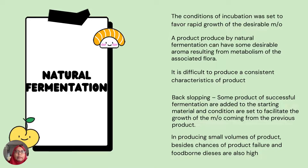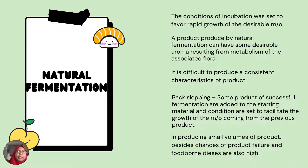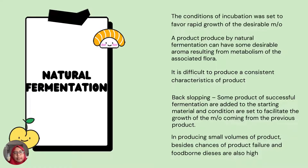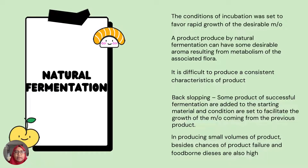Basically, the Koreans produce kimchi because they want to preserve vegetables so that they can have vegetables during the winter. They put chili layers on the cabbage, layer by layer, and then they store it underground so that during the winter they can still eat vegetables. A product produced by natural fermentation can have some desirable aroma resulting from the metabolism of the associated flora.